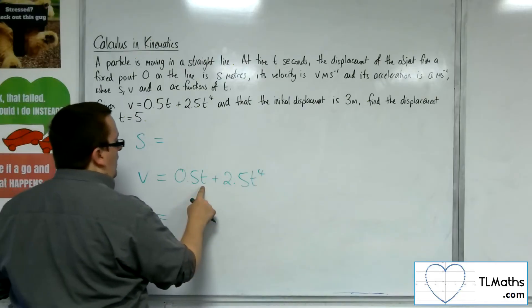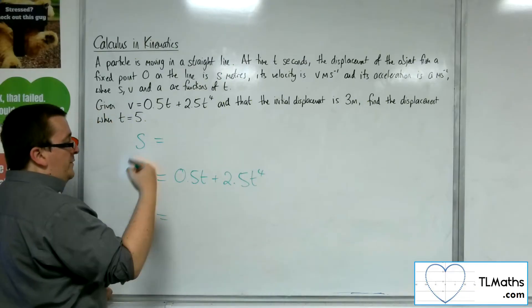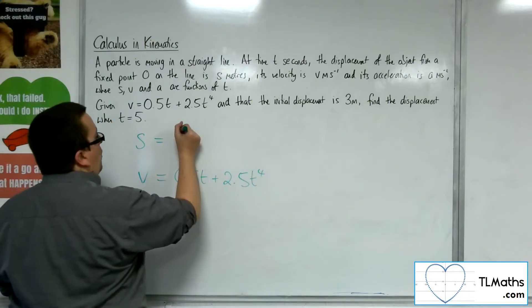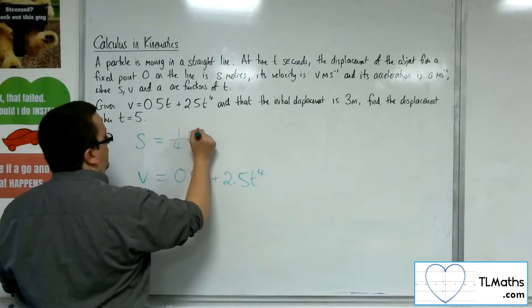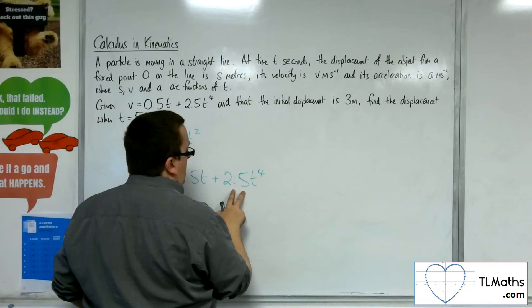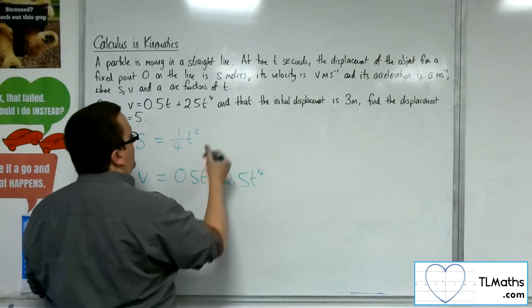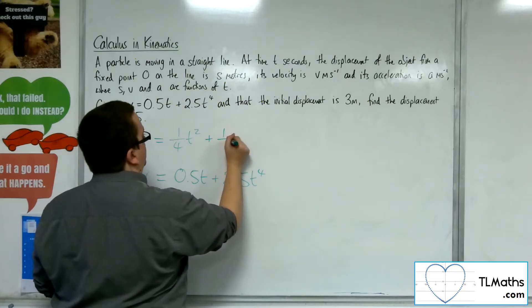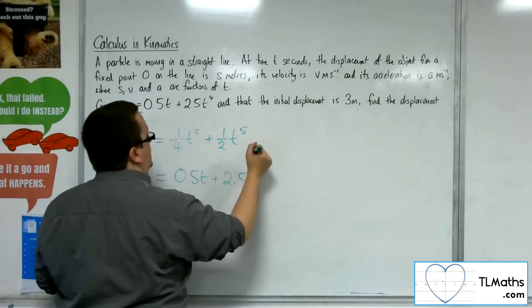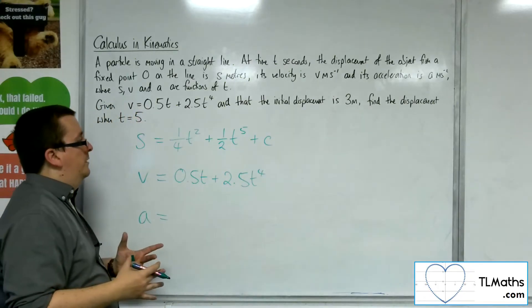So this is a half t. Integrating, adding 1 to the power, dividing by the new power, I get 1 quarter t squared. Now here, we've got 5 halves, so adding 1 to the power, dividing by the new power, gets me to 1 half t to the 5, and you must add in your constant of integration c.